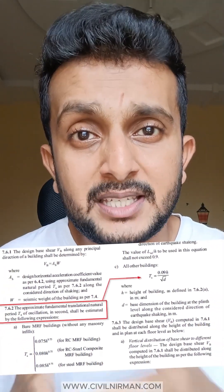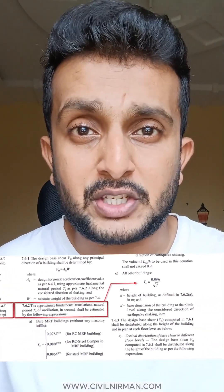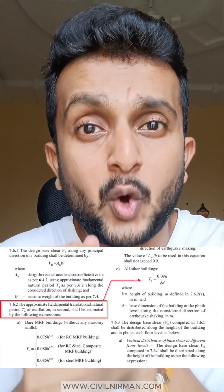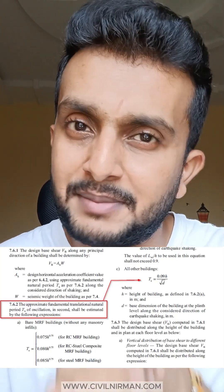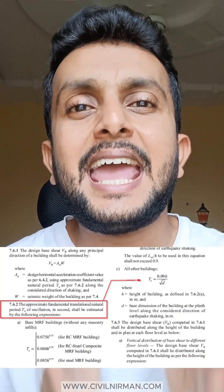In all three equations, you require two basic parameters: the building height and the base dimension. But how will you identify which height you need to consider or which base dimension you need to consider? This depends upon the category of the building — whether it's on the ground, has a basement, or is in another configuration.